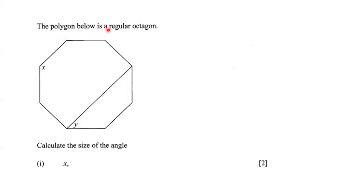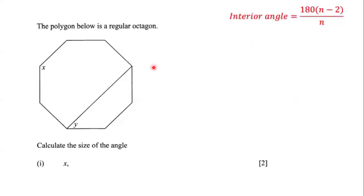The polygon below is a regular octagon. Here we have a regular octagon and we need to calculate the size of angle x, which is an interior angle of this octagon. In order to figure out the size of this interior angle, we are going to use the formula: the interior angle is equal to 180 multiplied by (n minus 2), all over n.